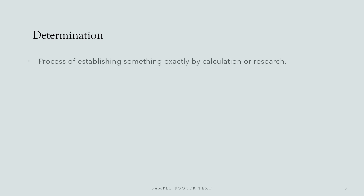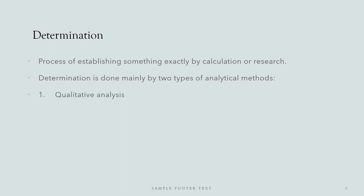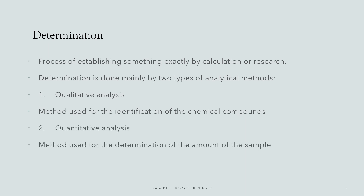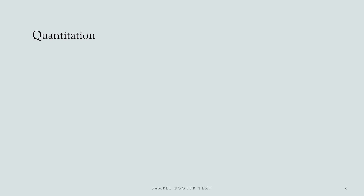Let's discuss the word 'determination,' which is used in both definitions. Determination is the process of establishing something exactly by calculation or research. It is done mainly by two types of analytical methods: qualitative analysis, used for the identification of a chemical compound, or quantitative analysis — which is used to measure or estimate the quantity — whereas identification means to point out what the compound is.